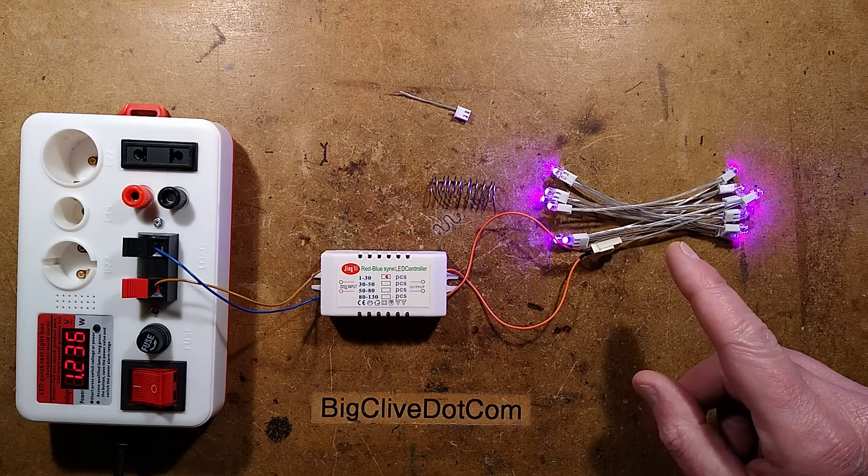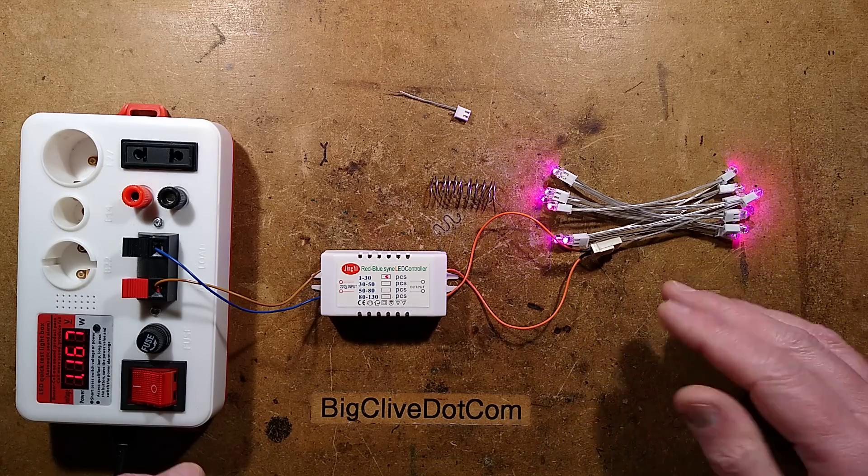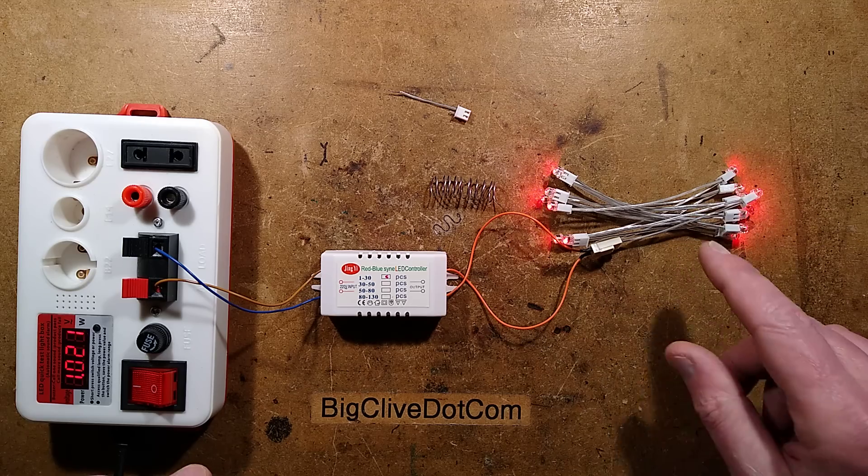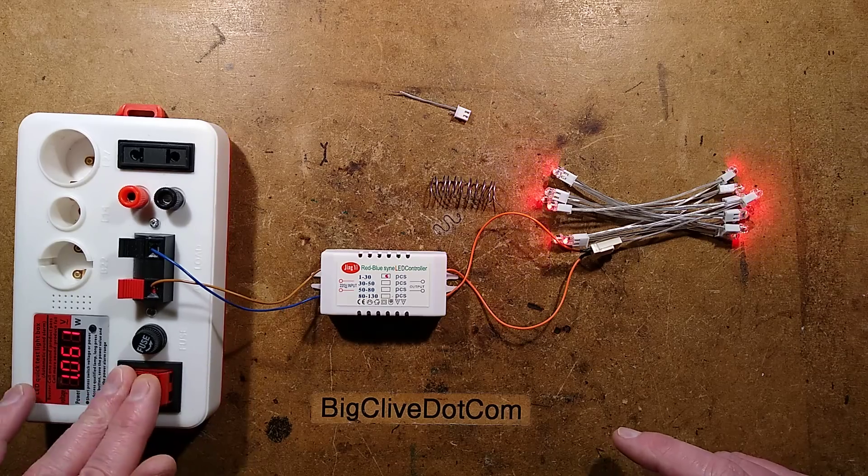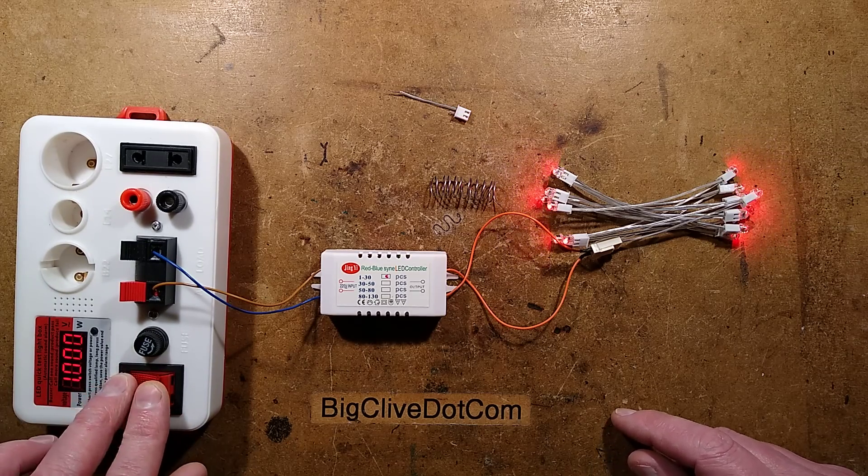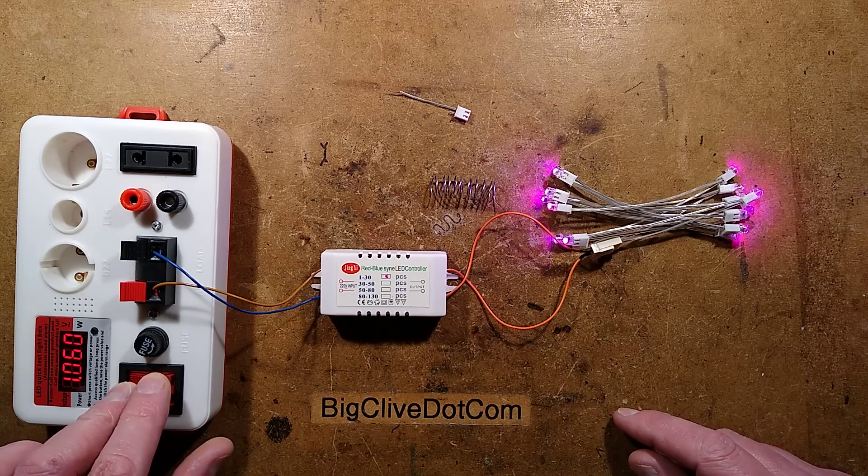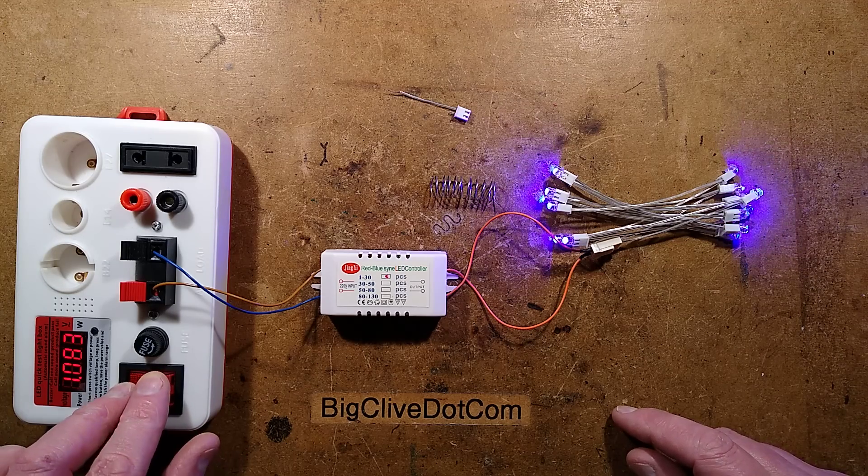You'll see a bit of shimmer because it is using phase angle control and also alternating the phase to actually light the different colors. But watch what happens if I turn it off and on again - it stays on at red, off and on stays on at magenta, off and on stays on at blue.